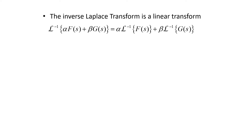It's important to note that the inverse Laplace transform is also a linear transform. That means if I take the inverse Laplace of α·F(s) + β·G(s), I can factor out the constant coefficients and then evaluate the inverse Laplace transforms term by term. This gives us α times the inverse Laplace of F(s) plus β times the inverse Laplace of G(s).